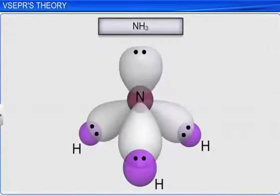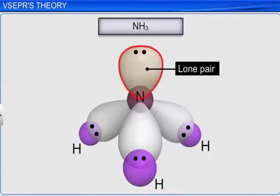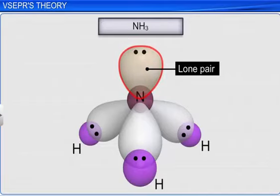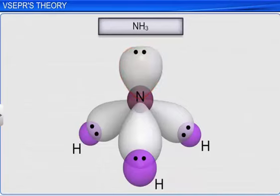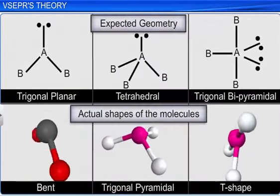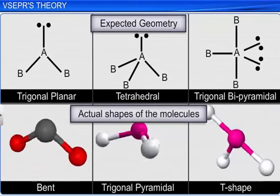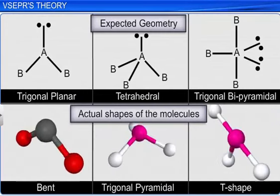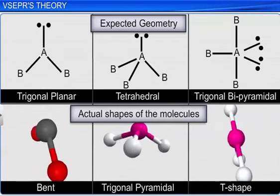However, the geometry of molecules gets distorted due to the presence of lone pair of electrons. Unlike bonded pairs that are shared between two atoms, the lone pairs of electrons are localized on the central atom. Due to this, they occupy more space, which results in greater repulsion. Thus, the geometry of molecules with lone pairs of electrons differs from the expected or regular geometry of molecules having only bond pairs.